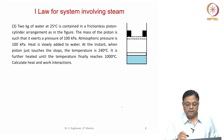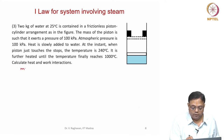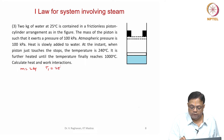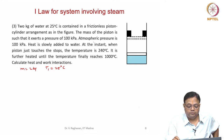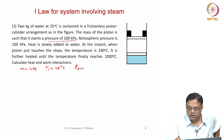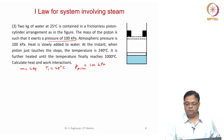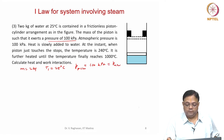Problem 3: 2 kg of water, m = 2 kg at T1 = 25 degrees centigrade in a frictionless piston-cylinder arrangement as in the figure. The mass of the piston is such that it exerts a pressure of 100 kPa. Atmospheric pressure is also the same. So that means when the piston has to float, the pressure should be atmospheric pressure plus piston pressure, that is 200 kPa.